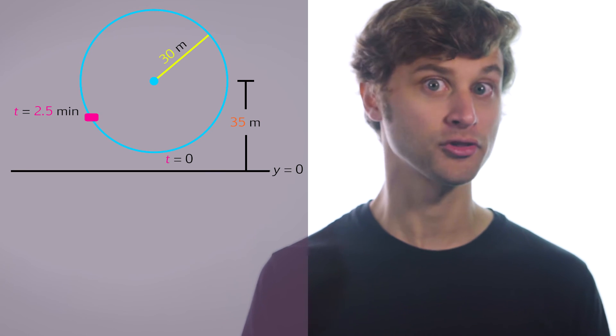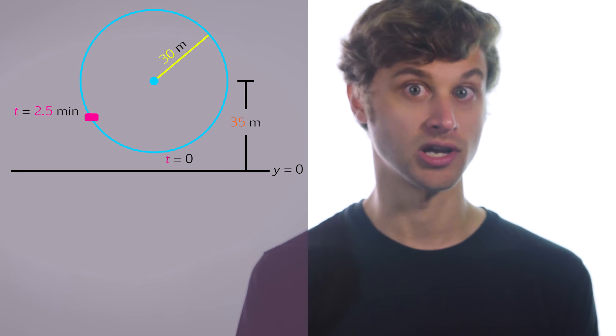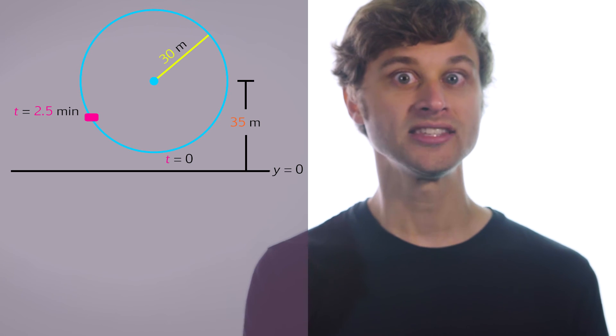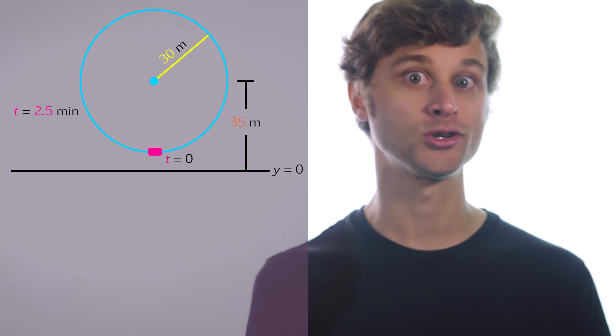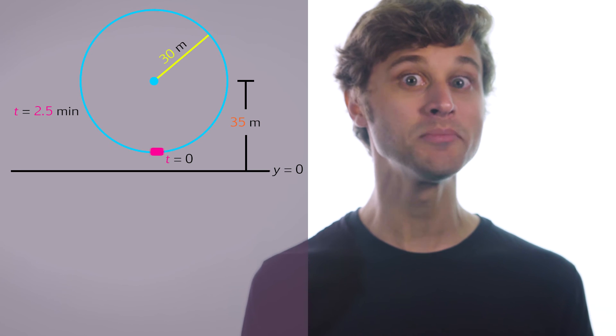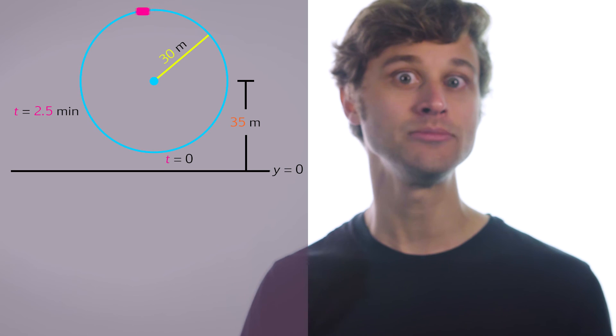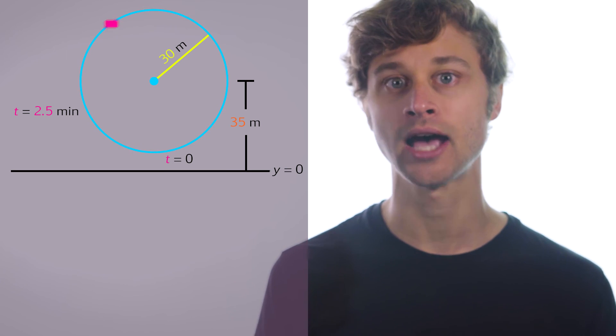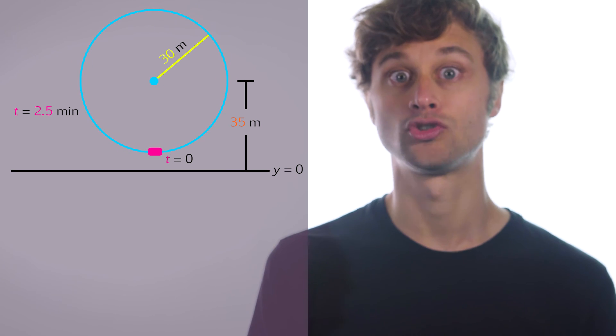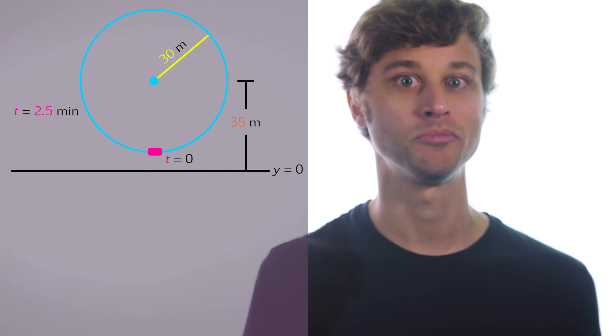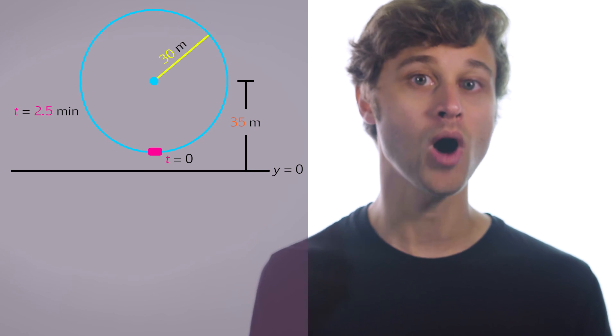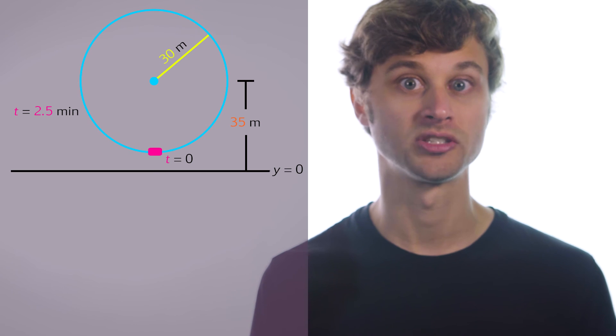First of all, let's ask ourselves the question: why should we want to model this problem using a trigonometric function? Well, we can see that this problem involves a Ferris wheel that oscillates between a minimum value and a maximum value, back to down to that minimum value, back up to the maximum value, and it keeps doing that over and over throughout time. This is similar to what trigonometric functions do—they oscillate between values of y.